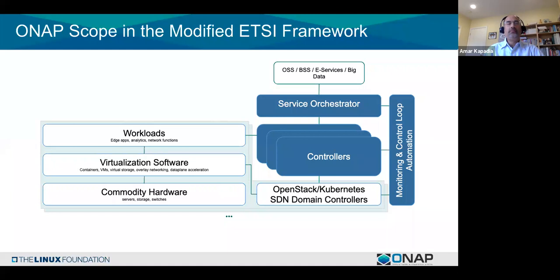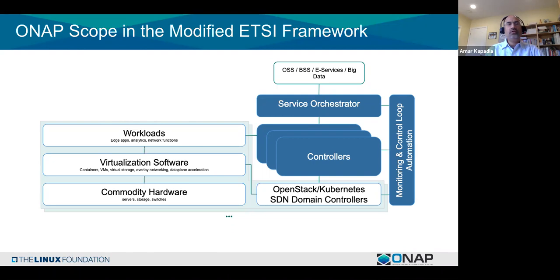ONAP in the context of the ETSI framework: on the left-hand side is the data path — commodity hardware, server storage switches — with virtualization software on top, including containers, virtual machines, virtual storage, overlay networking, and data plane acceleration. Above that are workloads: VNFs, CNFs, PNFs, analytics such as AI/ML, and edge applications like AR, VR, and drone control.